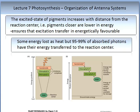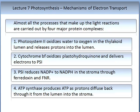If a pigment is closer to the reaction centre, it is lower in energy. This ensures that excitation transfer is energetically favourable. Some energy is lost as heat — about 95 to 99% of all energy — which is both a problem for the plant and potentially for agriculture, as it shows the plant is not as efficient as it might be.